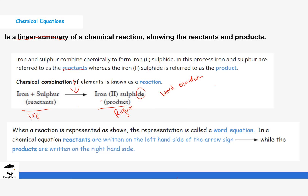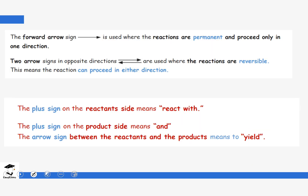Sometimes you can have more than one reactant. If you have more than one reactant, we combine them with a plus sign. The plus sign means 'reacts with' — for example, iron and sulfur. Then the arrow shows what it forms: iron and sulfur forms iron(II) sulfide. That is the function of the arrow.